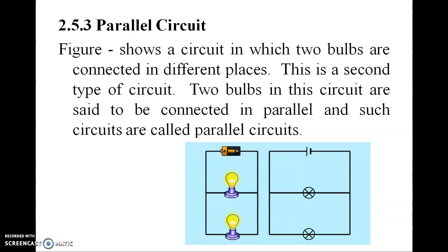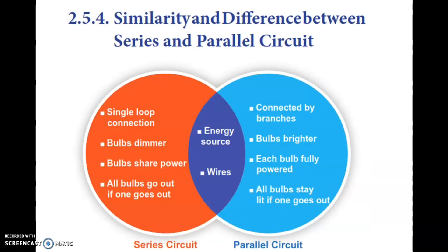In a parallel circuit, two bulbs are connected by branches and are said to be connected in parallel. Comparing series and parallel circuits: in series, there is a single loop connection and bulbs share power, whereas in parallel, components are connected by branches and each bulb is fully powered.